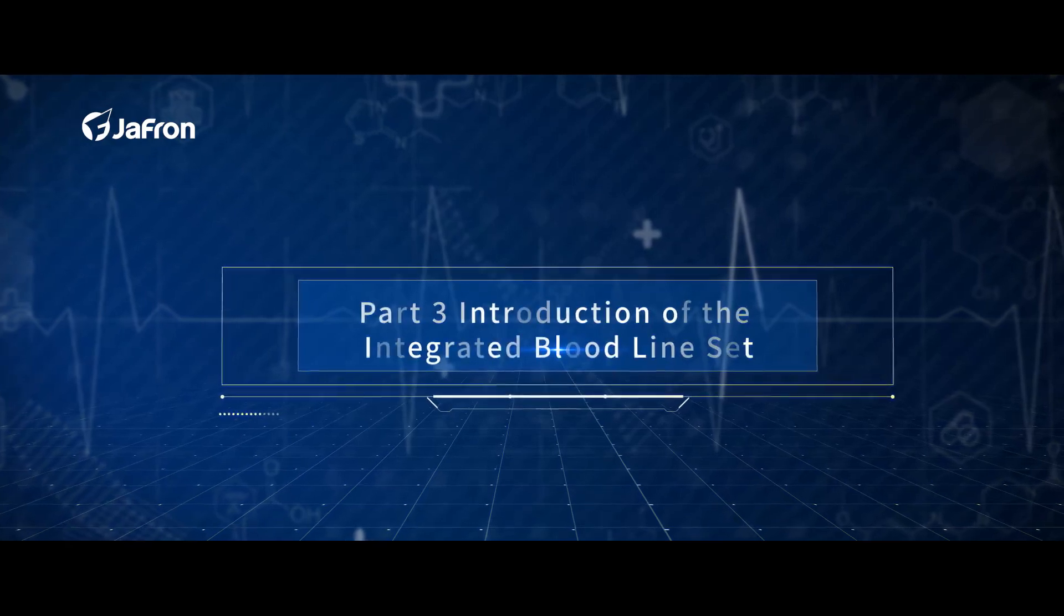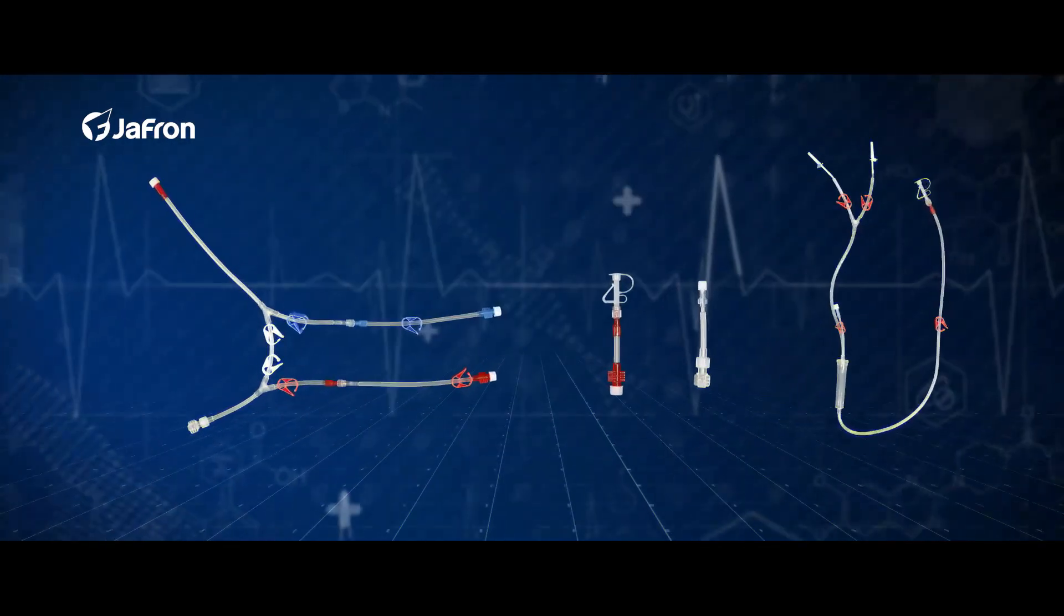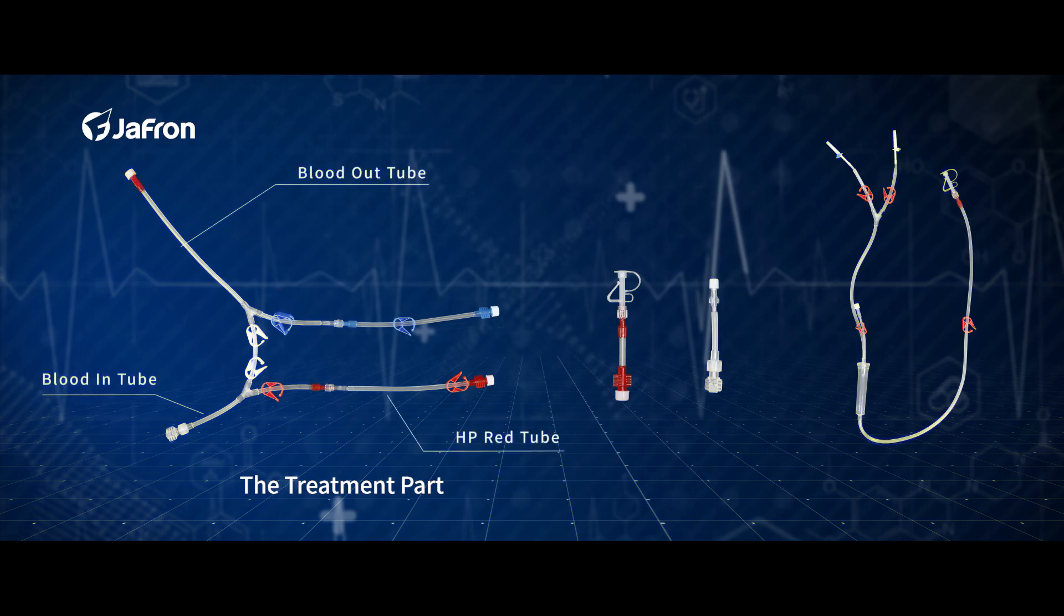Part 3: Introduction of the Integrated Bloodline Set. The Integrated Bloodline Set can be divided into 7 tubes: Blood In Tube, Blood Out Tube, HP Red Tube, HP Blue Tube, Blood In Plus Tube, Blood Out Plus Tube, and Priming Part.